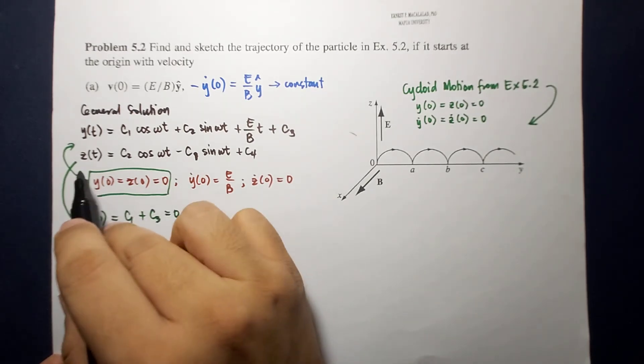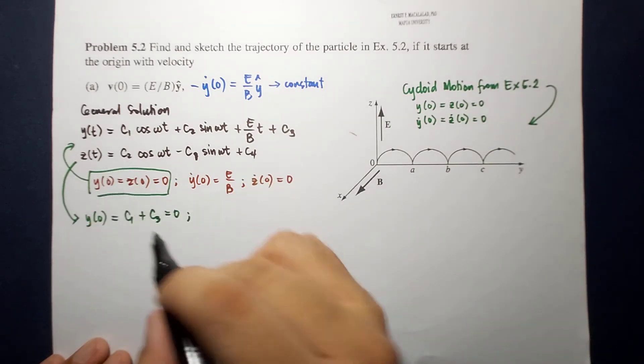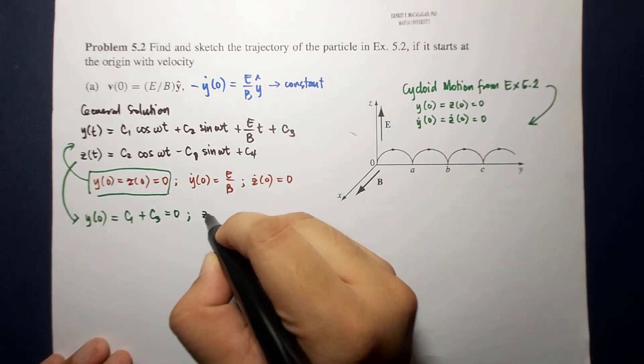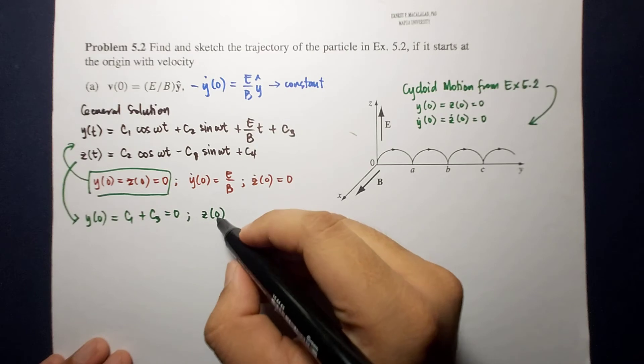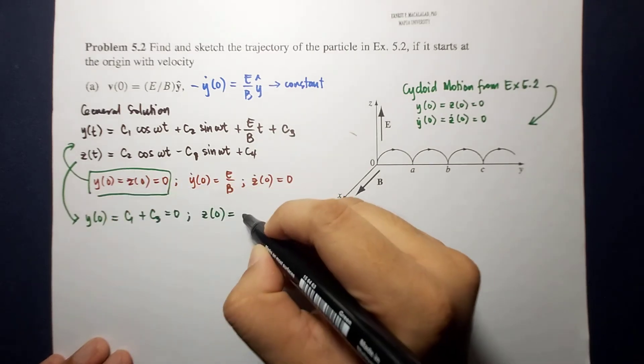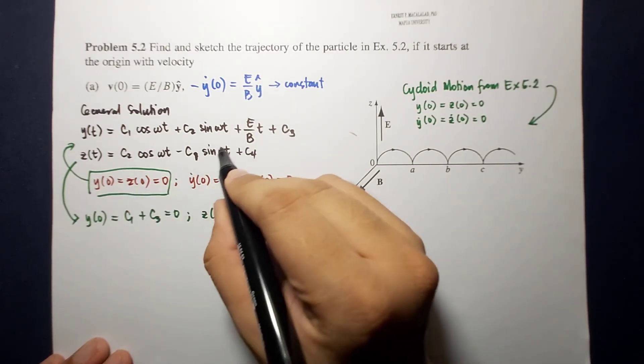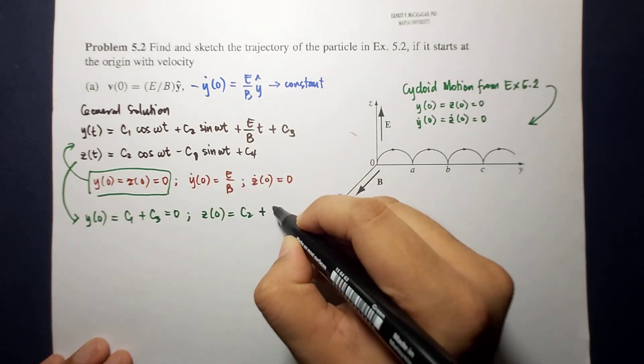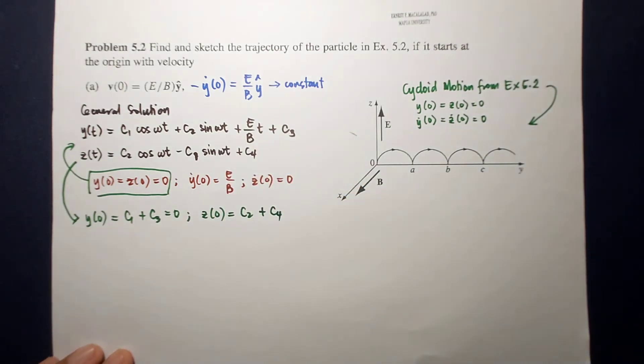On the other hand, if we plug in this here, the result would be z at time equal to 0 equals c2 plus c4, and this is equal to 0.